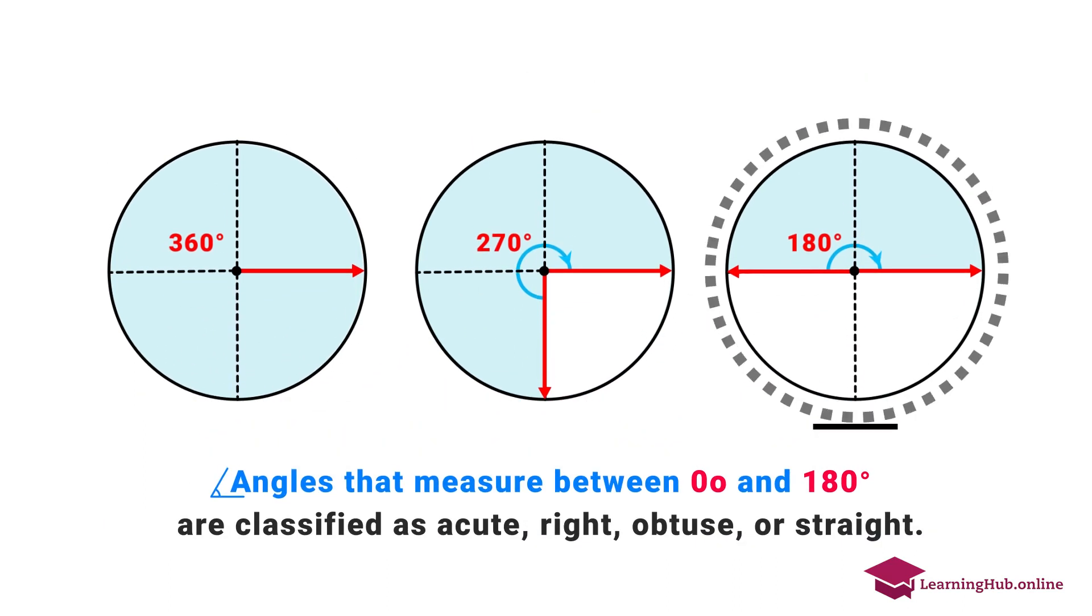Angles that measure between 0 degrees and 180 degrees are classified as acute, right, obtuse, or straight.